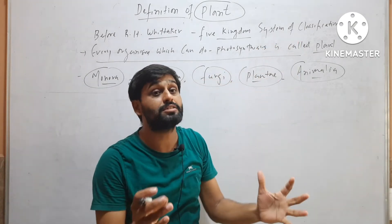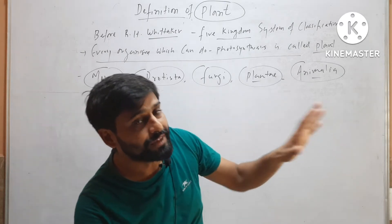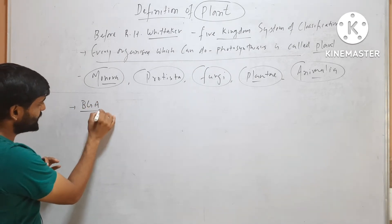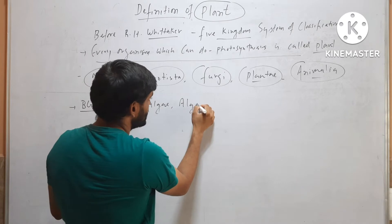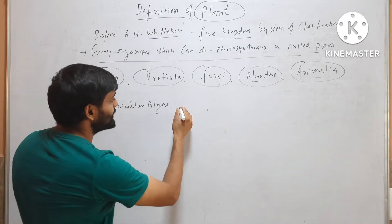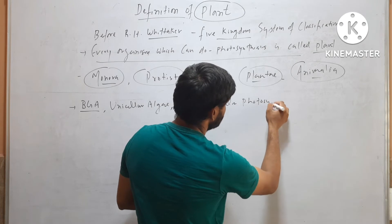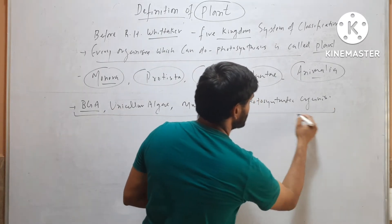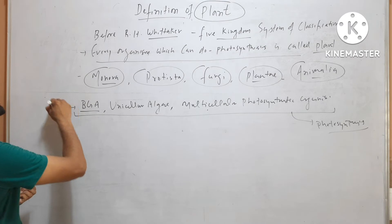On the basis of this classification — which is the most accepted and most trusted classification — we will try to define a plant according to R.H. Whittaker. We know that blue-green algae, unicellular algae, and other photosynthetic organisms were initially all called plants.